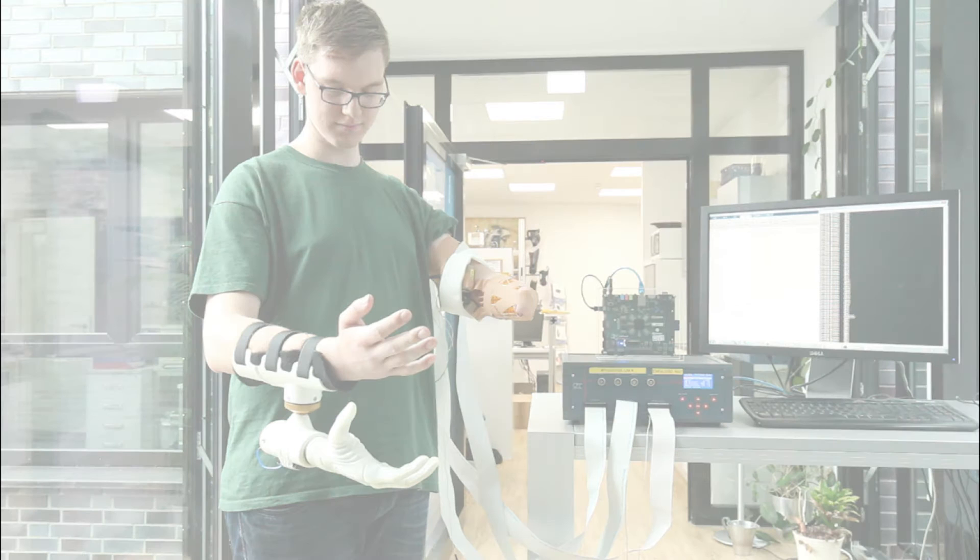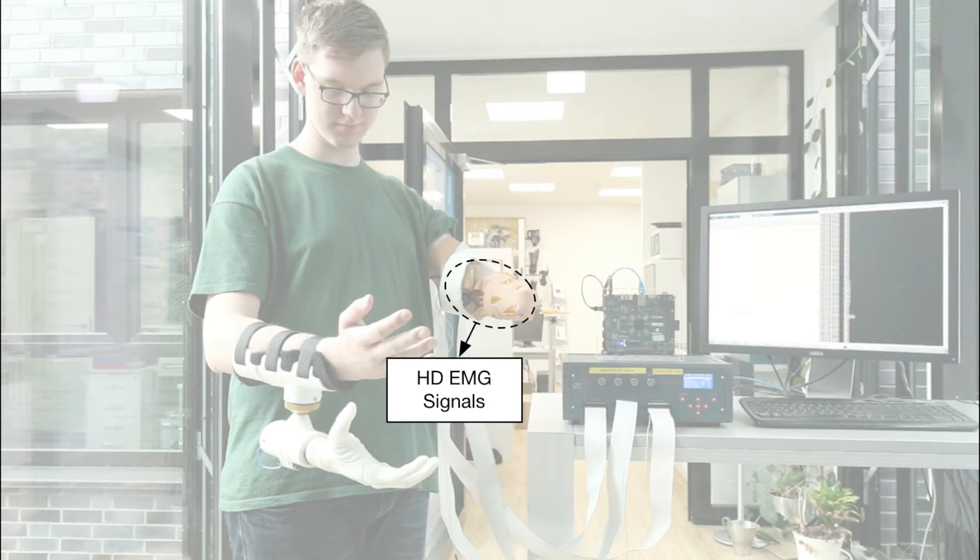We evaluated our system using real signals from an amputee and a real prosthesis. And here you can see our system. The movement classification process begins with the acquisition of the muscular activity signals. 192 sensors are attached on the amputee's residual limb and the signals are acquired by a DAQ device.